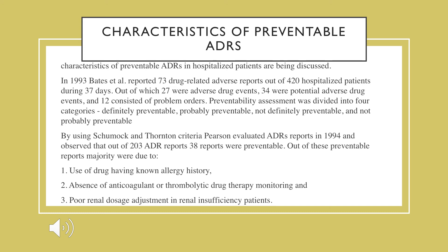In 1994, the Schumock and Thornton criteria evaluated 203 ADR reports, of which 38 were preventable. The majority were due to using a drug despite a known drug allergy — the patient had an allergic history but the drug was used again without proper knowledge. Other causes included absence of anticoagulant or thrombolytic drug therapy monitoring, and poor renal dosage adjustment — patients with renal insufficiency where the dose was not adjusted accordingly.